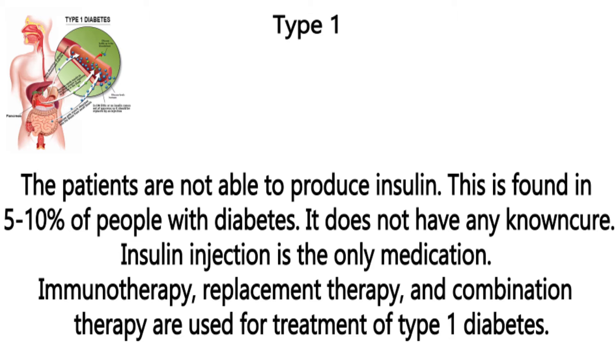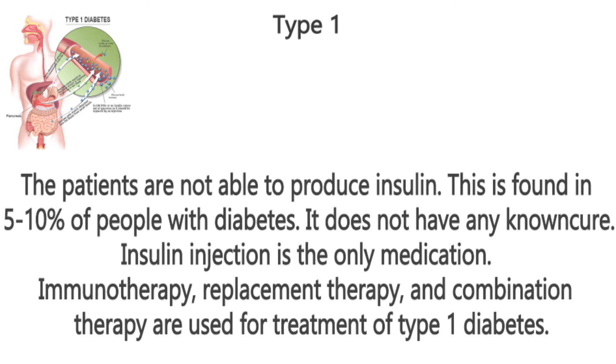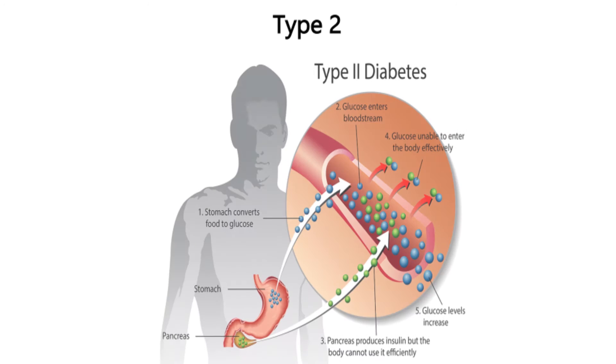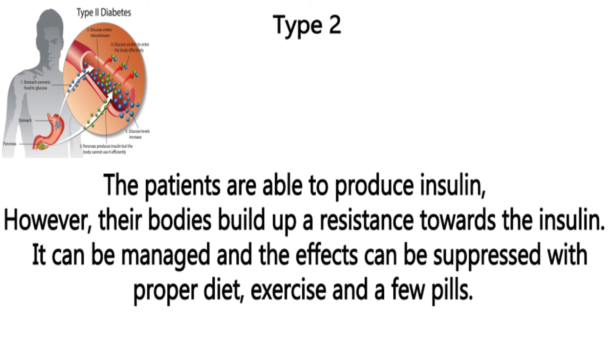Immunotherapy, replacement therapy and combination therapy are used for treatment of type 1 diabetes. In type 2 diabetes the patients are able to produce insulin however their bodies build up a resistance towards insulin. It can be managed and the effects can be suppressed with proper diet, exercises and a few pills.